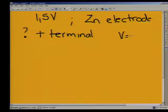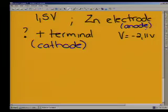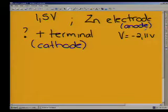Then the voltmeter read minus 2.11. Now, what they imply in the question: the first thing I'm going to go over is what information they're actually giving me. In a galvanic cell, is the positive terminal the cathode or the anode? It's the cathode. So the unknown metal is my cathode, which means the zinc must be the anode. Zinc is the anode, which means the zinc electrode must be oxidized.